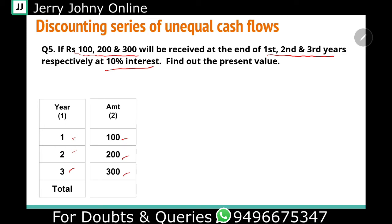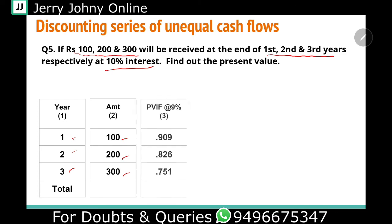With discounting, the number of years compounded alone is not enough, because the amount — 100 or 200 — is something you get in the future. We need the present value. So we have to look directly at the table and find how long the amount is discounted. For 100 rupees received at the end of one year, we look at year 1 in the table.